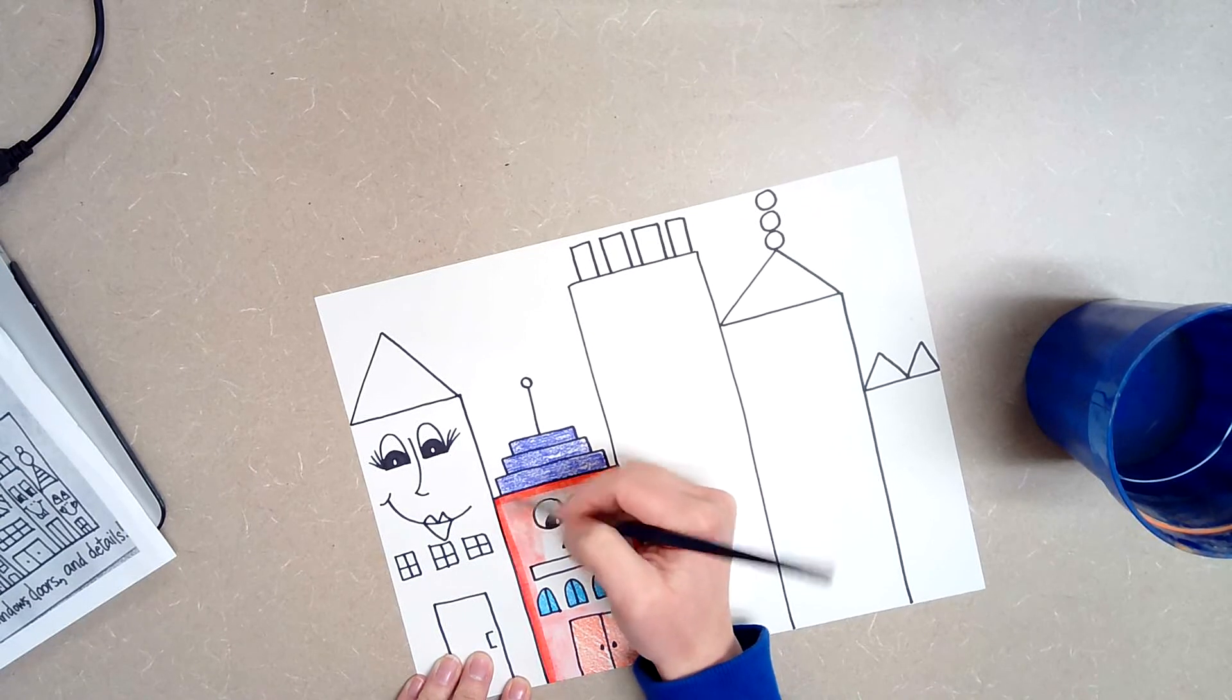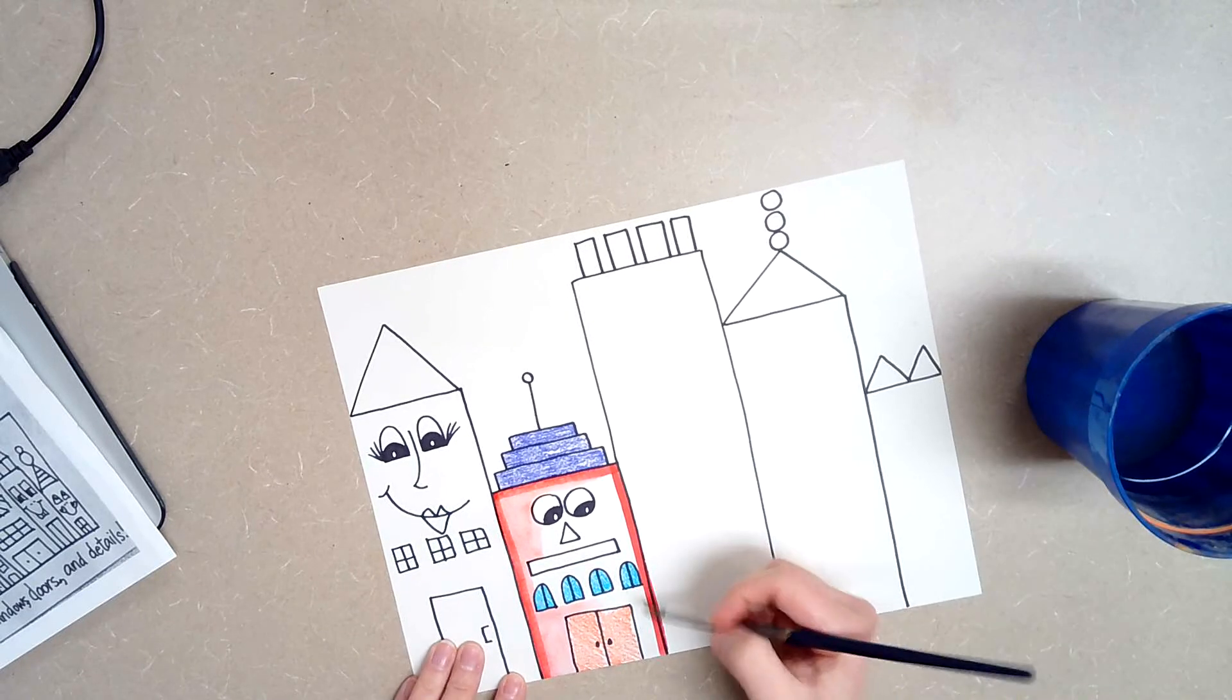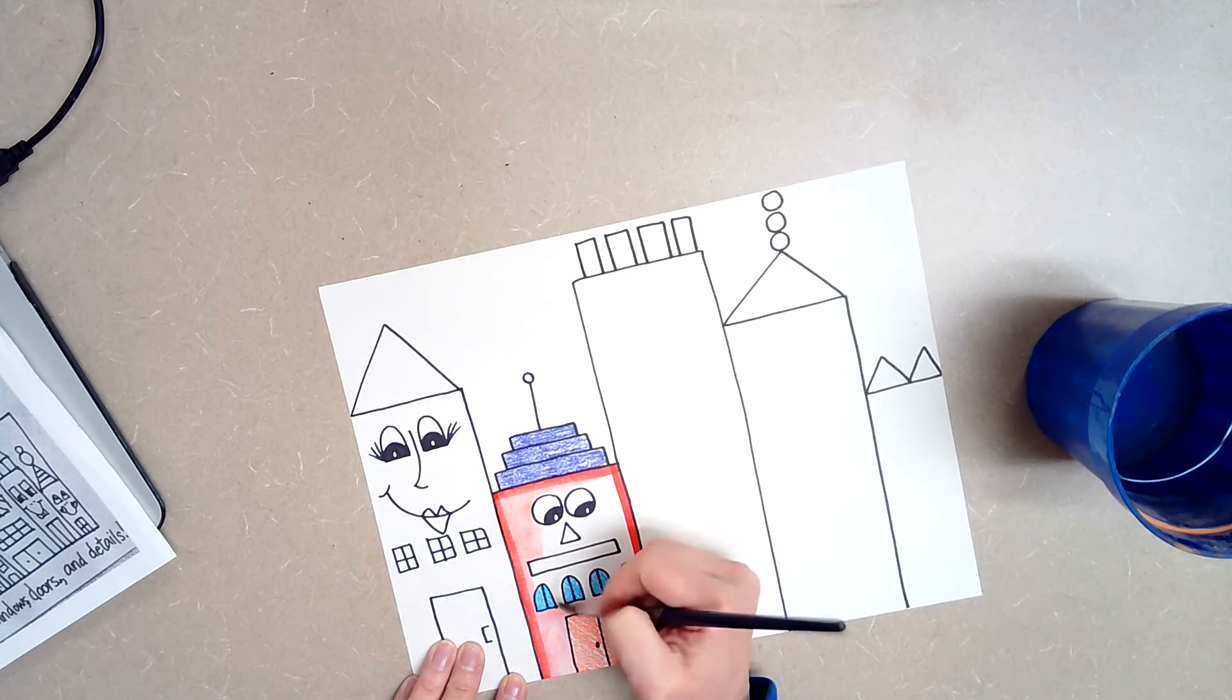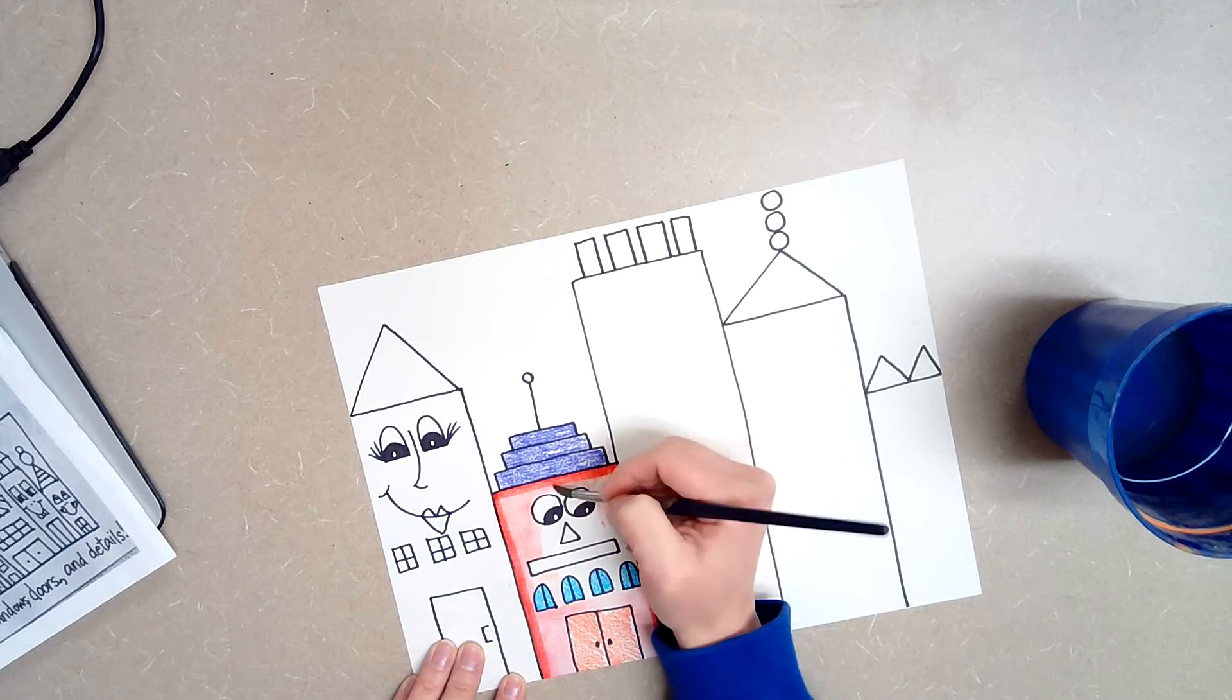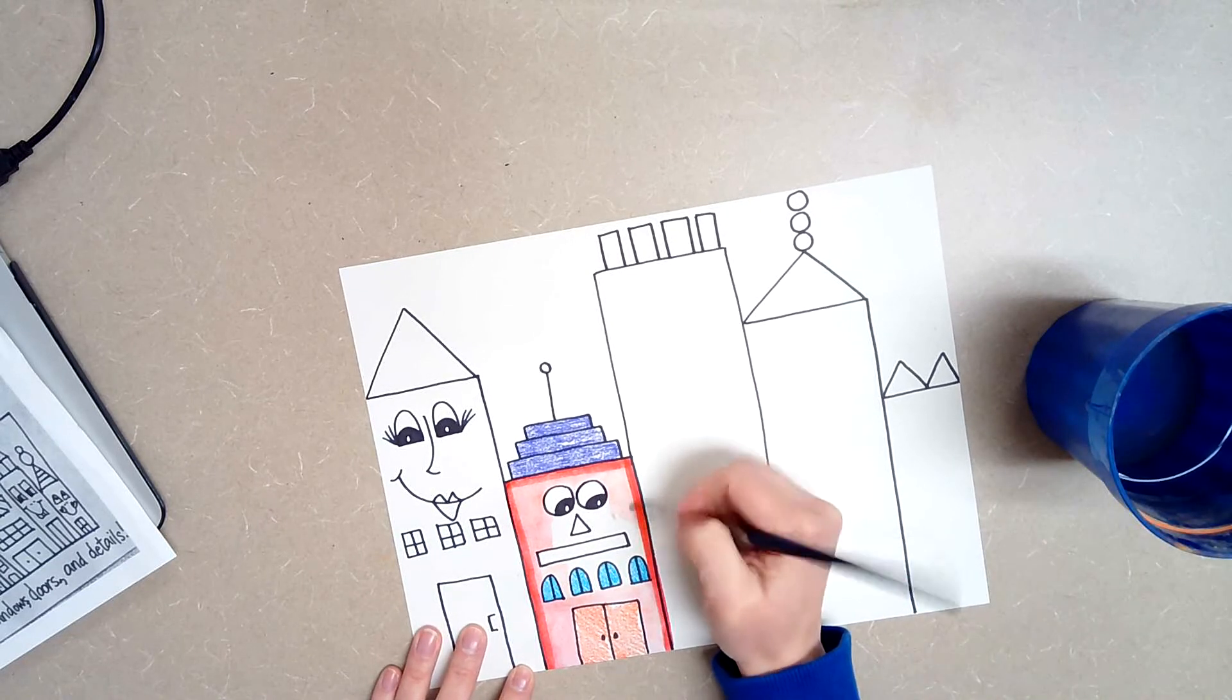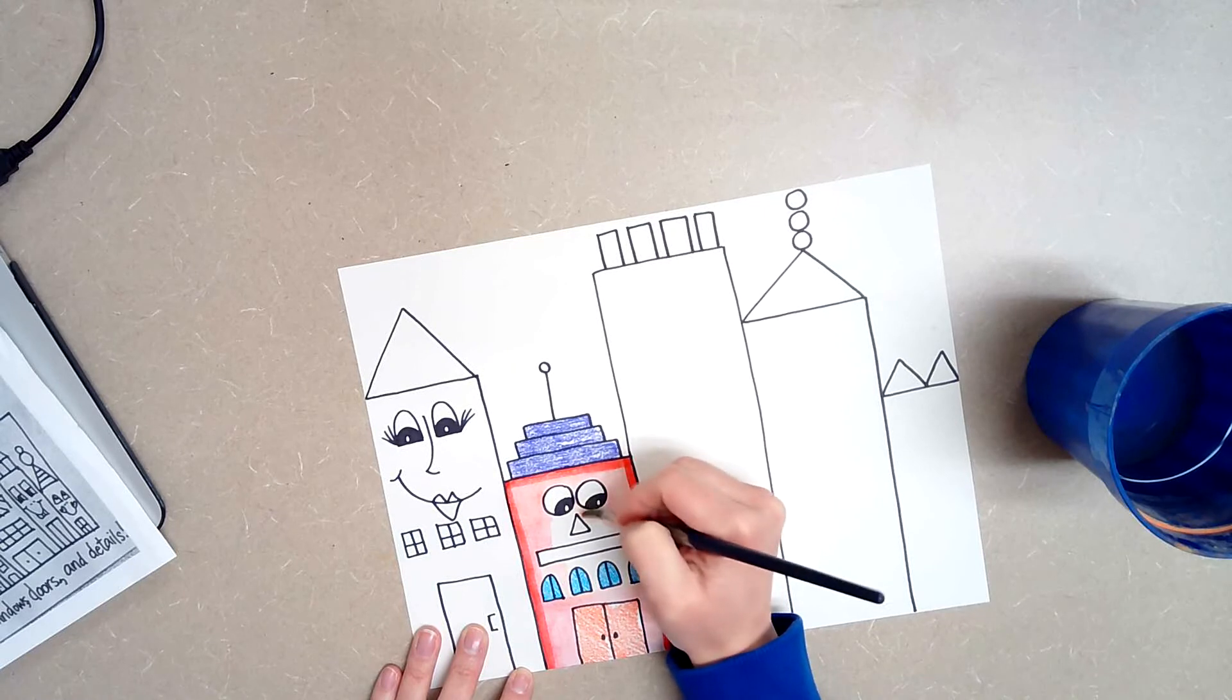Now you don't want your paper to be soaking wet because then it's going to rip and it's going to be really hard to work with. I'm going to paint around the eyes. Like I said, if you don't have markers then you'll just color in your building using crayon which is fine too.